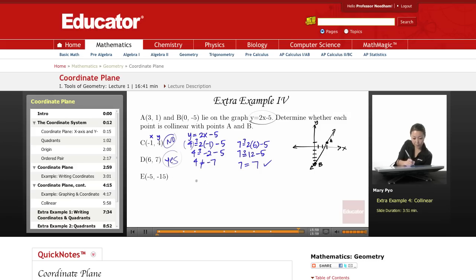And then my last point, point E. So negative 15 equals 2 times negative 5 minus 5. Put a question mark again. Negative 10 minus 5. So negative 15 does equal negative 15. So this is also yes.